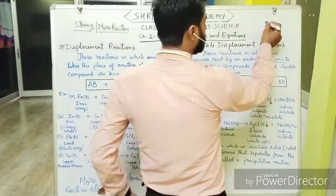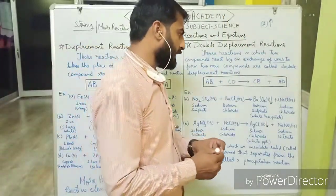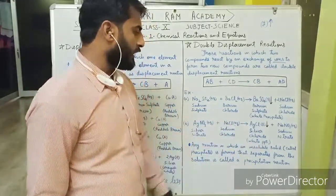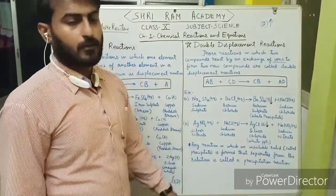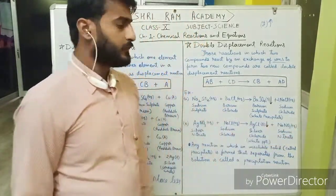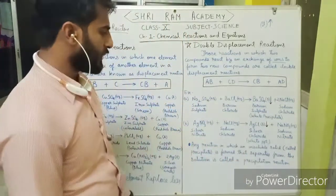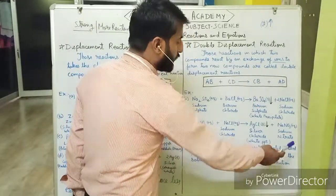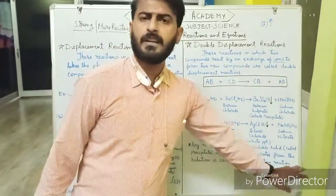If a gas evolves in a reaction, it is shown by an upward arrow. The second example is the reaction of silver nitrate and sodium chloride in aqueous solution. A white-colored precipitate forms, and the silver nitrate solution forms sodium nitrate solution. These reactions are known as precipitation reactions — any reaction in which an insoluble solid called a precipitate separates out from the solution.